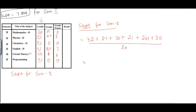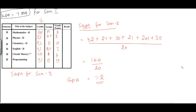For semester 2: 4 × 9 = 36 (wait, working through the values) — 3 × 9 = 27, 3 × 10 = 30, 3 × 7 = 21, 4 × 6 = 24, and 3 × 10 = 30. This is divided by the total credits earned. She passed all subjects, so adding all credits gives 20. Adding the numerators: 144. So 144 divided by 20 = 7.2. This is the GPA for semester 2.